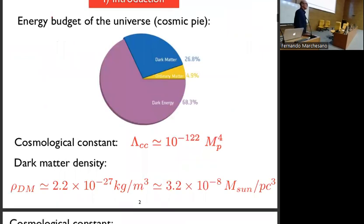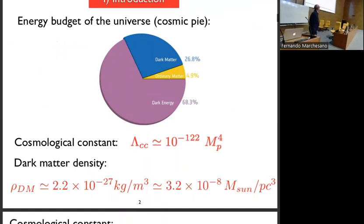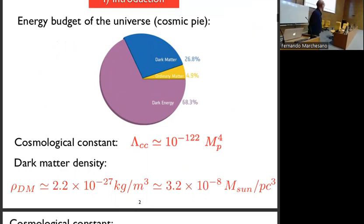I guess you all have seen this picture — the cosmic pie — showing that we need to explain the dark energy component in the universe, and also the missing dark matter, which is not seen by direct observations. So there are these two puzzles, and even more, there's a question that we see.